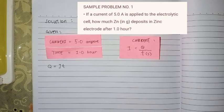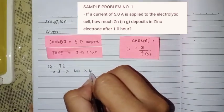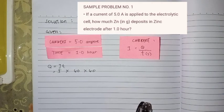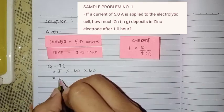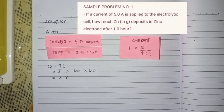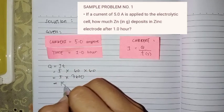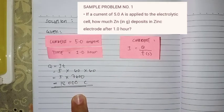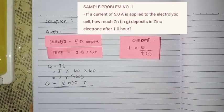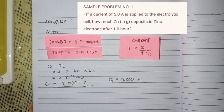Q equals current times time. So it's 5 times 60 times 60. Why 60 times 60? Because in 1 hour there are 60 minutes, and in 1 minute there are 60 seconds. So 60 times 60 is 3,600. 5 times 3,600 equals 18,000. Our charge equals 18,000 coulombs.